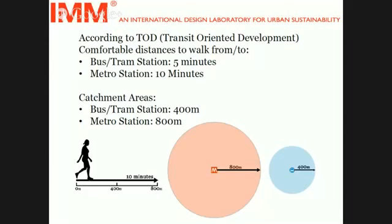All of these modes of transportation have different catchment areas. For a metro station, this would be 800 meters, and for bus and tram stations it would be 400 meters. So what we did was put these catchment areas wherever we found metro or tram stations, and we built a map of public transportation corridors. Then we overlaid this map with the map of distribution of functions.